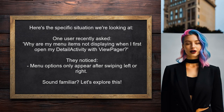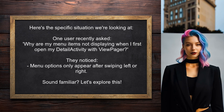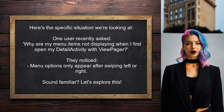Here's the specific situation we're looking at. One user recently asked: why are my menu items not displaying when I first open my detail activity with view pager? They noticed that the menu options only appear after swiping left or right. Sound familiar? Let's explore this together.